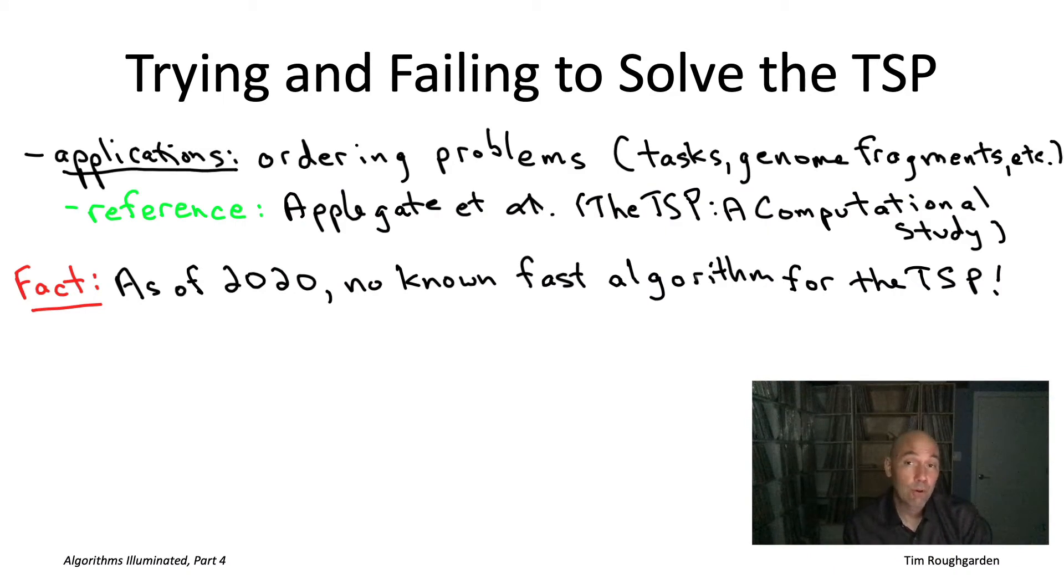All right, so to be a little more precise, I should say what I mean by a fast algorithm. And remember, way back in part one of the book series or early on in these video playlists, we agreed that by a fast algorithm we should mean an algorithm whose running time scales linearly or close to linearly in the size of the input. And that would be a blazingly fast algorithm. Now here, I'm actually just talking about a very relaxed notion of a fast algorithm. I'm talking about an algorithm with any polynomial running time. So forget about blazingly fast running times. No one even knows an algorithm for the traveling salesman problem guaranteed to run in n to the 100 time, where n is the number of vertices, or even n to the 10,000 time. We don't even know that.